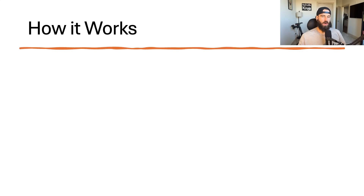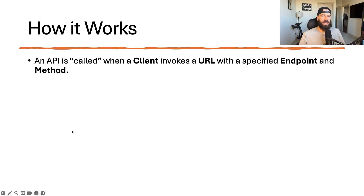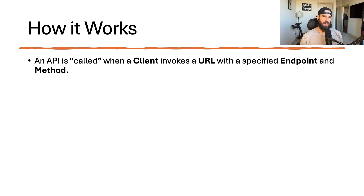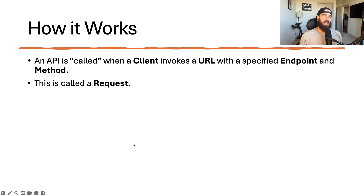An API is called when a client invokes a URL with a specified endpoint and method. A client can be a front-end web application, a user, a back-end — really anything that can communicate over Hypertext Transfer Protocol, or HTTP. A URL is a uniform resource locator used to locate specific things on the internet. An endpoint specifies which data the client is looking for from the server, and the method indicates the intention of the request — whether the client wants to read or write data. These things together make up the request.